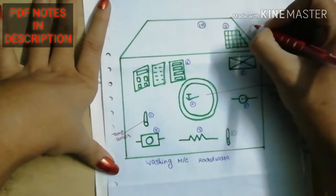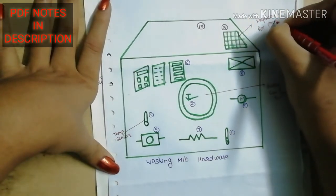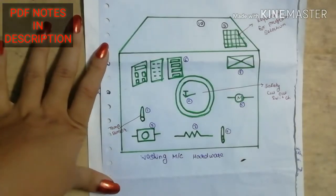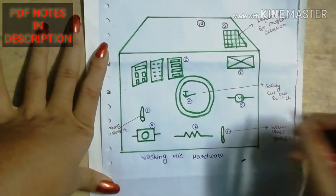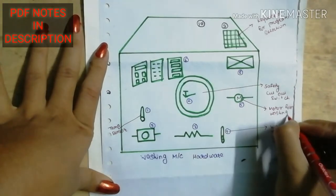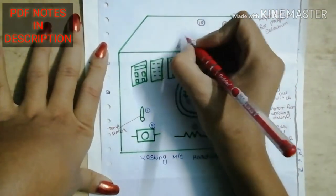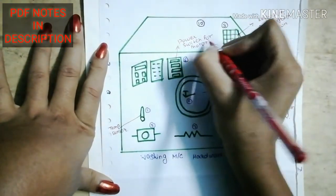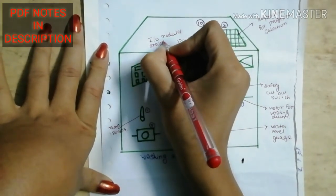Third one, this one is keyboard for program selection. Fourth one is water level gauge. Fifth one is motor for washing drum.